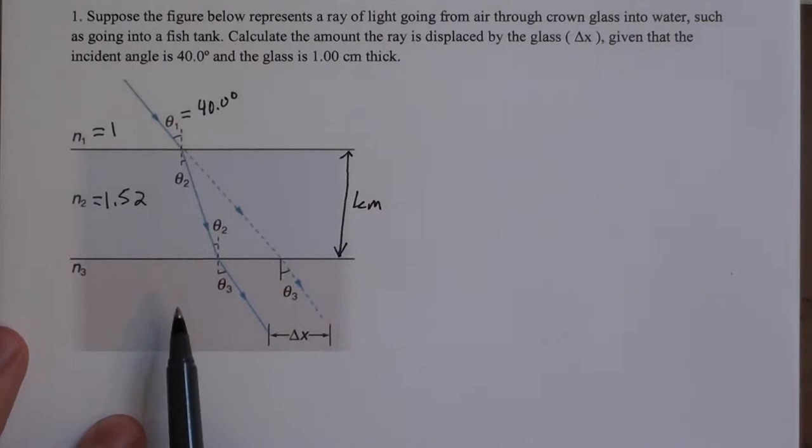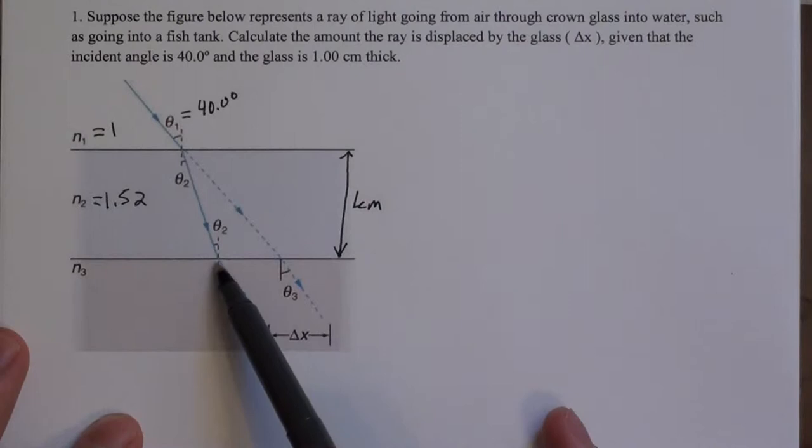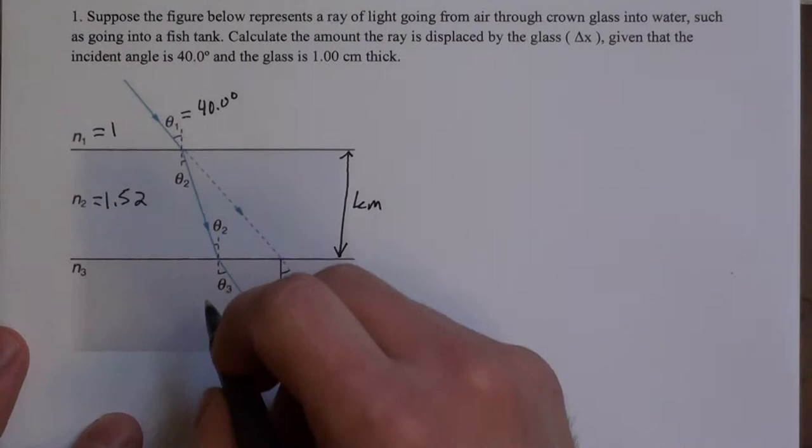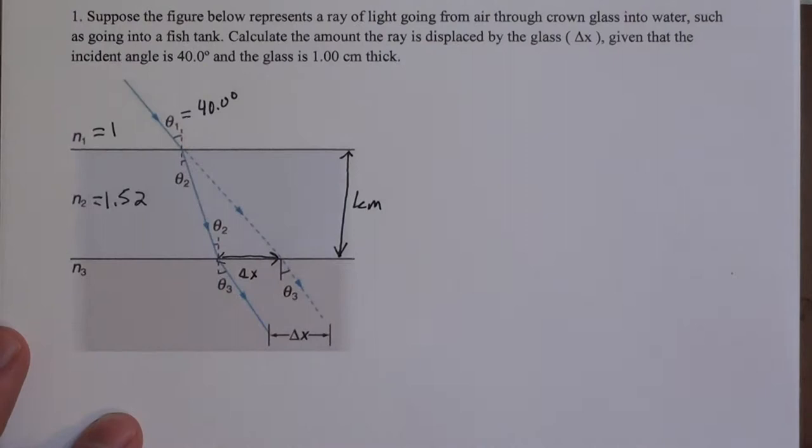Alright, so the original path of the ray is diverted because of refraction at this air-glass interface. So this distance that it's diverted through a 1 centimeter piece of glass, that's what we're solving for, solving for this delta x.